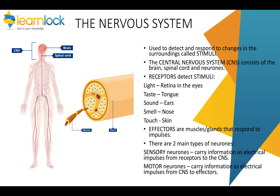There are receptors in your body that detect stimuli. For example, you'll have receptors in your eyes, in the retina, that detect light, or receptors in your nose that detect smell. Effectors are muscles or glands that respond to impulses. We'll look at those later when we look at the pathway of a response.